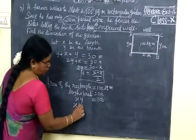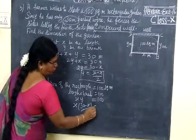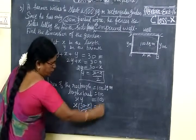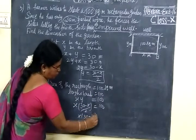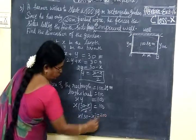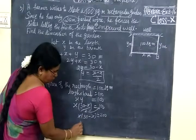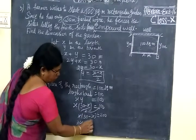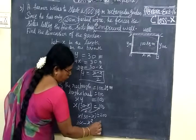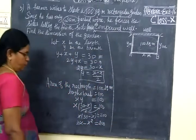So instead of y, we are writing 30 minus x by 2 equal to 100. Take 2 to that side. So x into 30 minus x equal to 200. We are taking 2 to the next side. x into 30, 30x. Then minus x squared equal to 200.